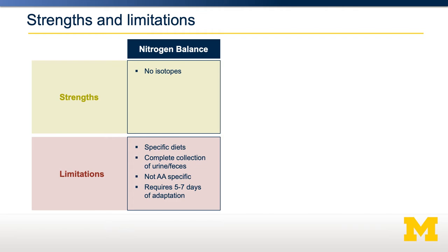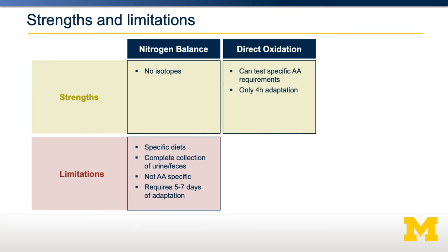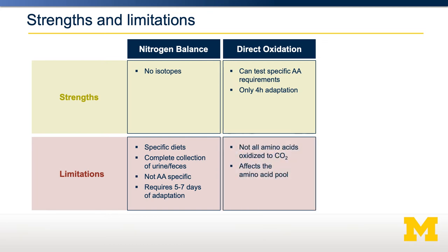Let's compare these three methods. Nitrogen balance has the advantage that it doesn't use any isotopes, but it requires very specific diets and careful collection of urine and feces over multiple days, as well as a few days of adaptation. Direct amino acid oxidation, much like indirect amino acid oxidation, has the advantage that you can test both total protein and individual amino acid requirements. Direct amino acid oxidation has a shorter adaptation period, but has the limitation that not all amino acids can be oxidized into labeled carbon dioxide.